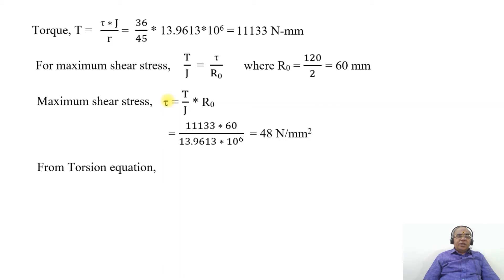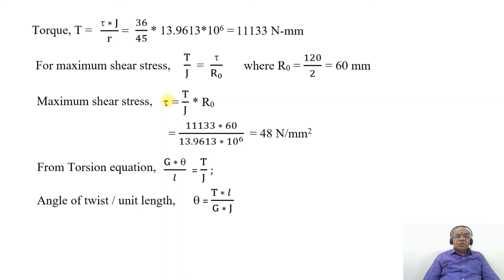From the torsion equation we have G into theta by L equals T by J. For angle of twist per unit length, L equals 1, so theta equals T into L by G into J, where T is 111133 Newton mm and L is 1 unit length.